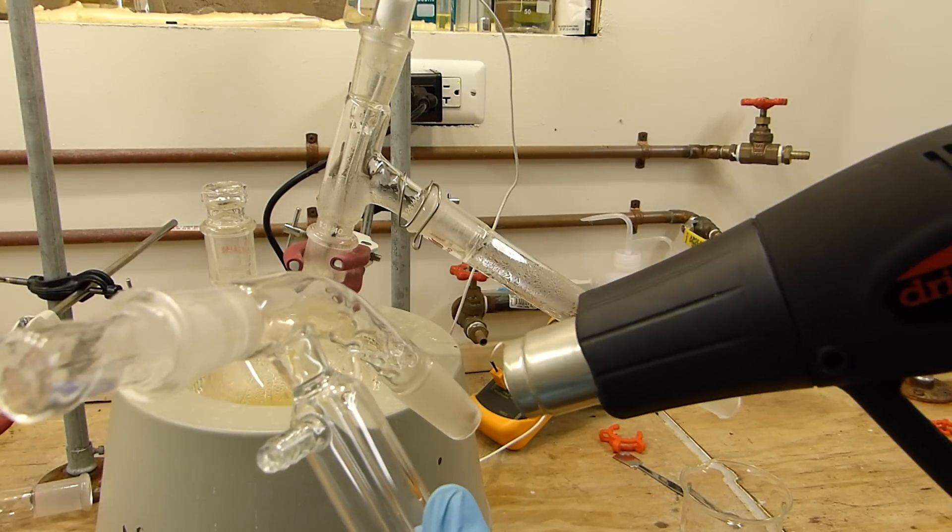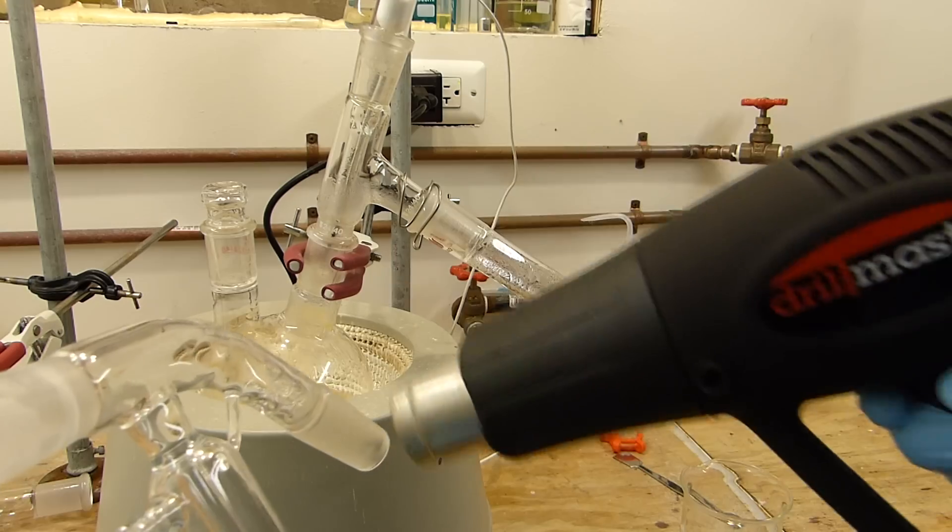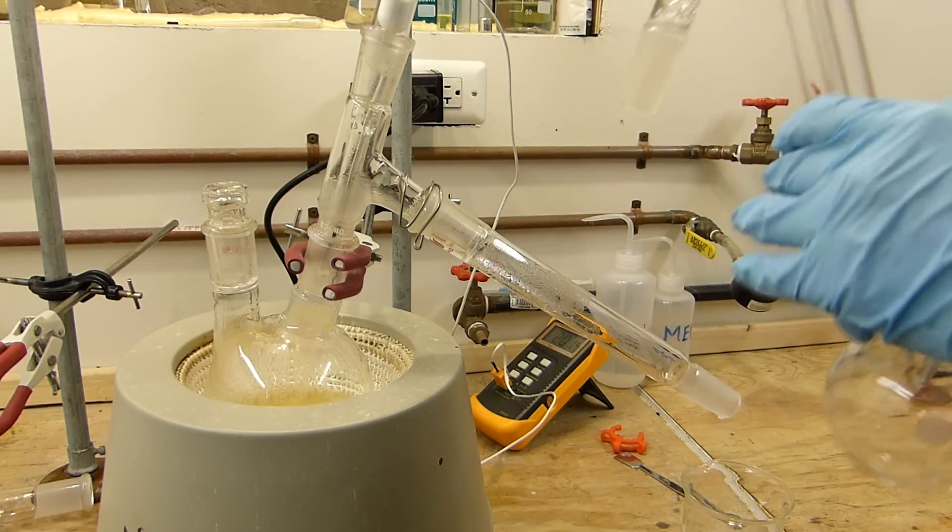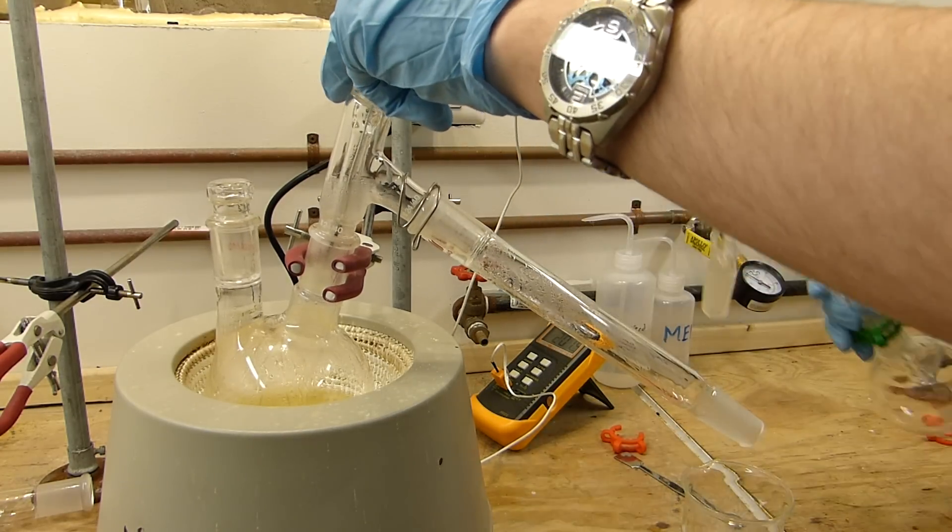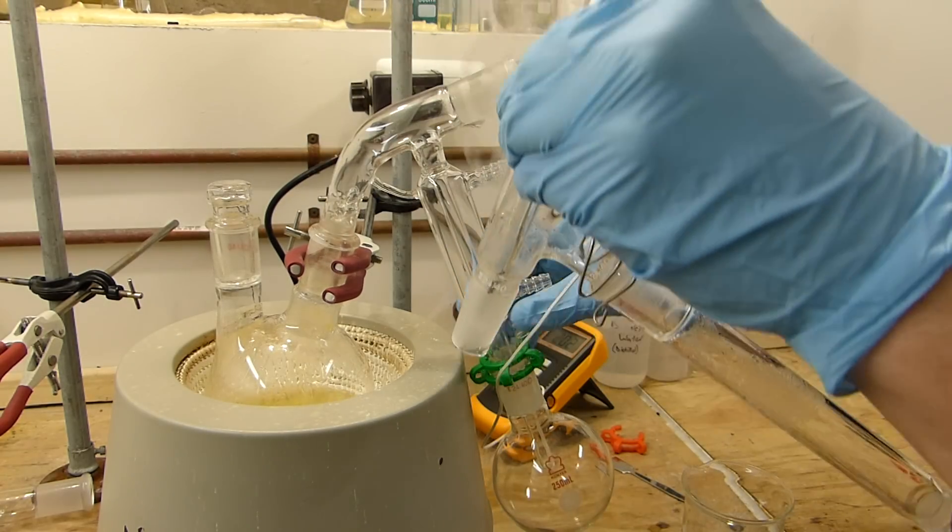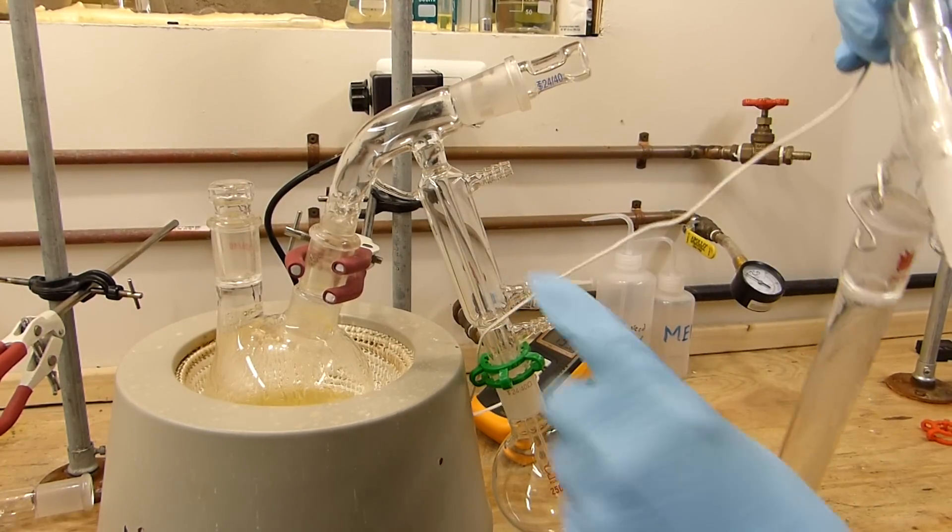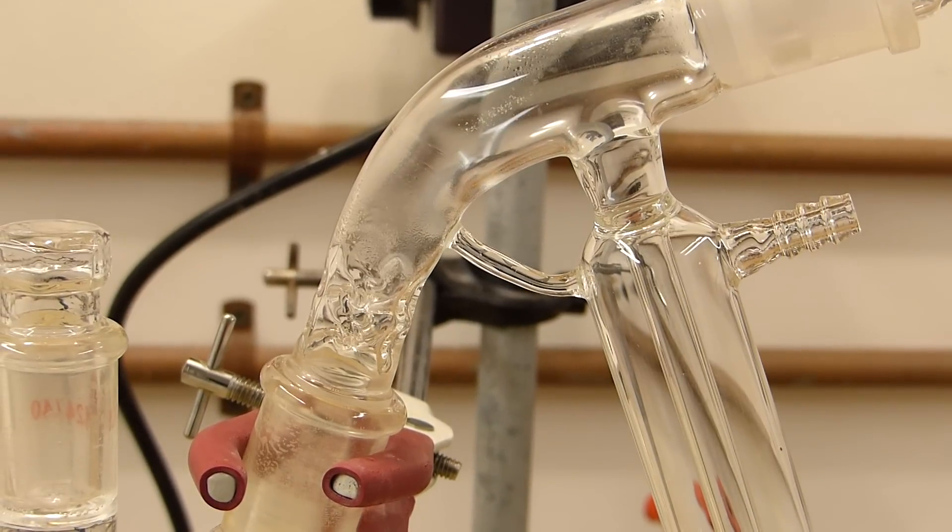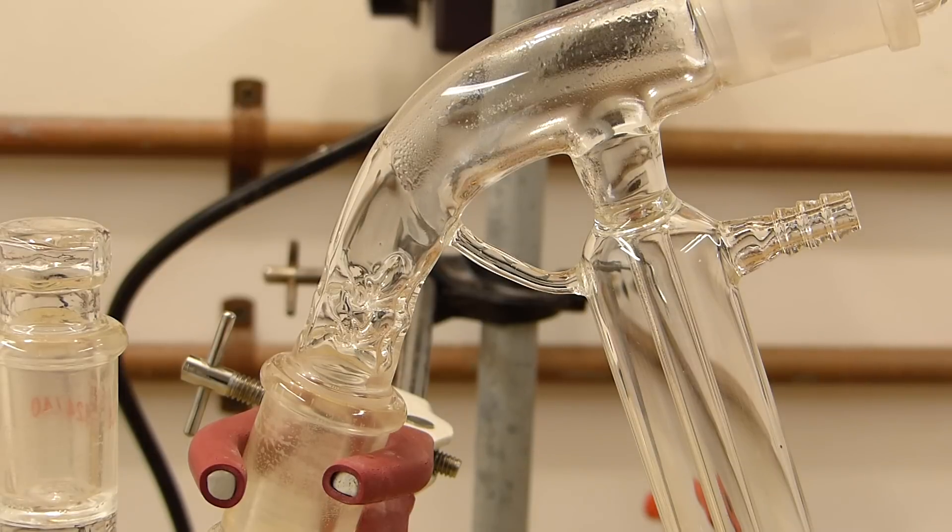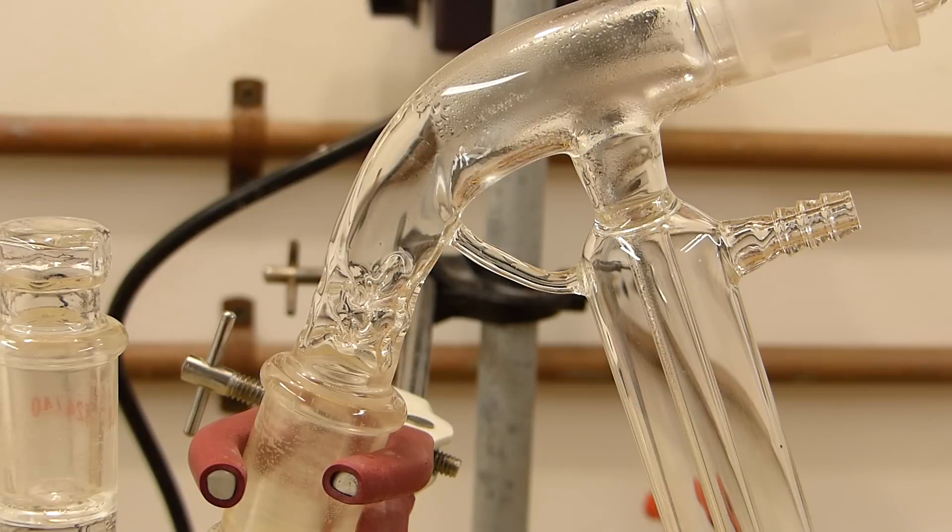I'm going to preheat this still head, especially the ground glass joint, that way the thermal expansion minimizes the chances of cracking the joint when I insert it into the hot socket. That ought to do it. Let's do the swap. Don't breathe the acetamide vapors. That's why I have a fume hood. You can watch the vapor front start to rise, and it'll eventually pour down through the condenser.